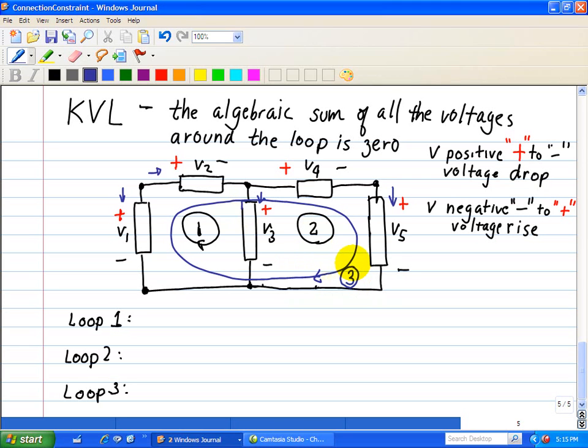So let's write the KVL equations for loop 1, so again, we'll start off here, and we should end up here, and that's equal to 0. So, we're going from a minus to a plus, so that's a negative V1. We're going from a plus to a minus, so that's a plus V2, so we're entering that device with a positive. And then, here, we're entering V3 with a positive, so that's a positive V3, and that's equal to 0.